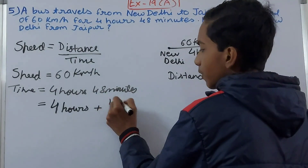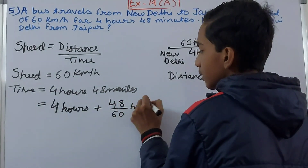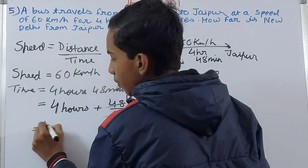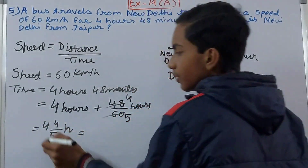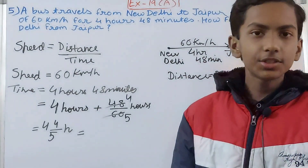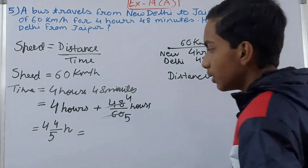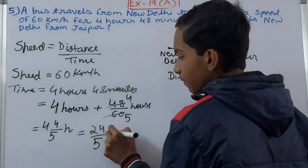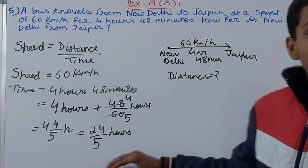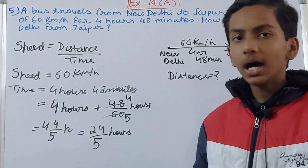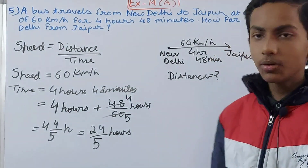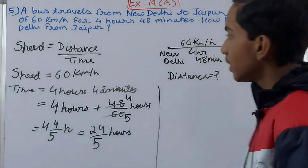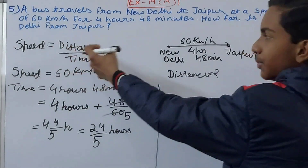So the time becomes 4 plus 48 upon 60 hours. Simplifying 48/60 by canceling: we get 4 and 4/5 hours. Converting this mixed fraction to an improper fraction: 5 times 4 is 20, plus 4 gives 24 upon 5 hours. This is the complete time in hours only — not in mixed minutes and hours. So time equals 24/5 hours and speed equals 60 kilometers per hour.